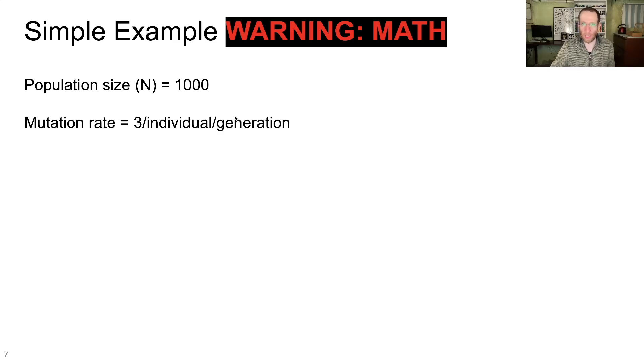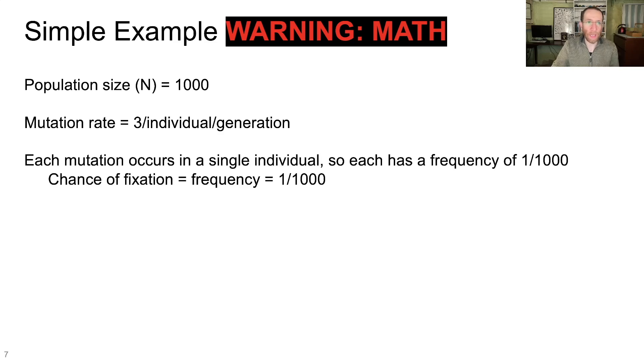And the mutation rate we're going to say for this population is three mutations per individual per generation. So each individual in this population experiences three mutations. Now when each of those mutations occurs, it occurs in a single individual, right? Mutations happen within individual genomes. So each mutation has a frequency of 1 in 1,000. For people that want to nitpick right here, we're pretending this is a haploid population. Don't worry about anything like diploid genomes or recombination or anything like that. We're keeping it simple.